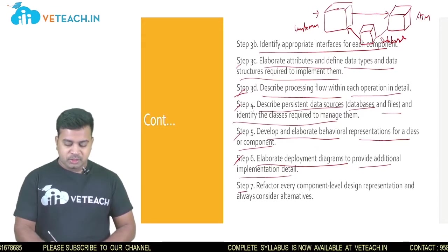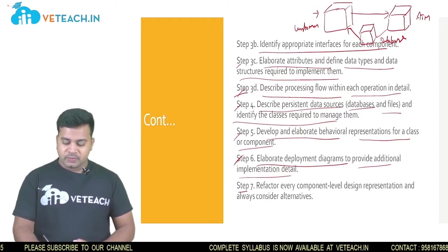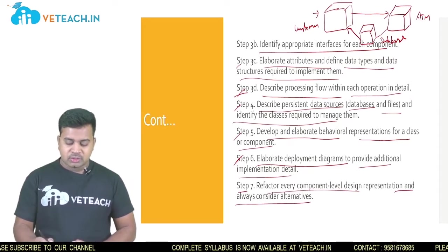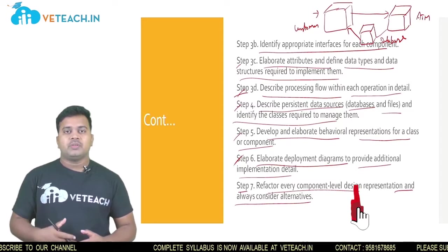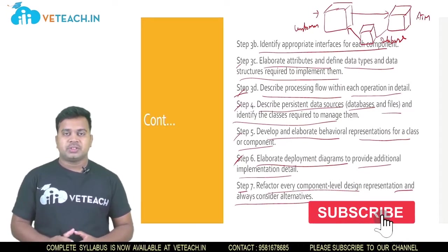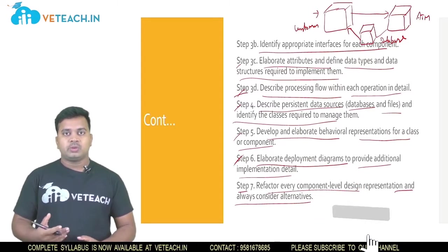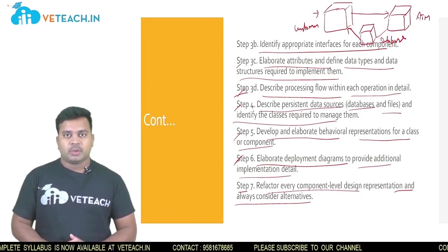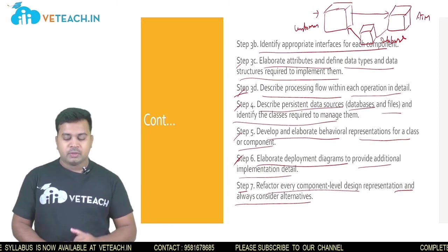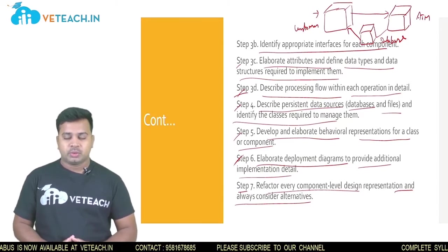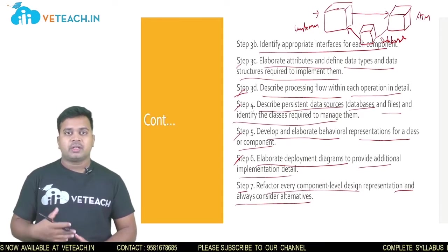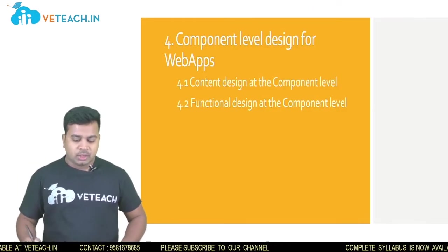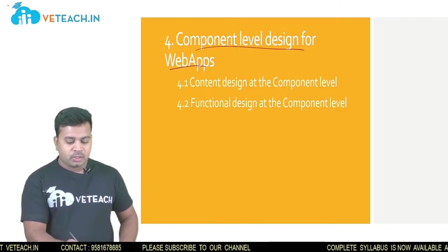Step seven is to refactor every component level design representation and always consider alternatives. Whatever you have done in the previous sections, you need to refactor all those things — finding the best ways to address any particular problem. This kind of refactoring is very important and should be done in every alternative section.